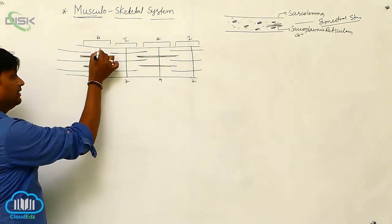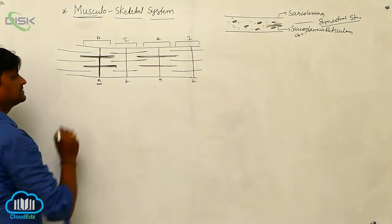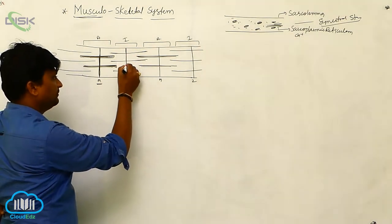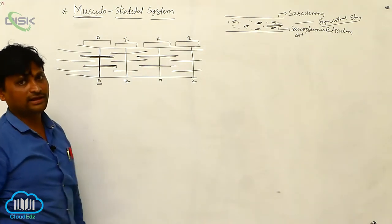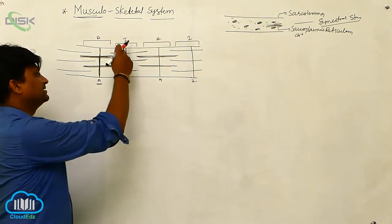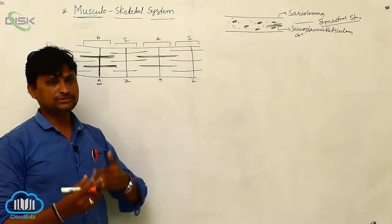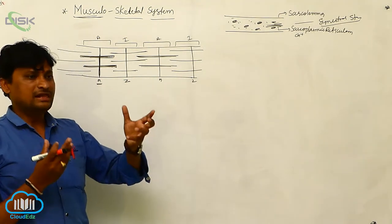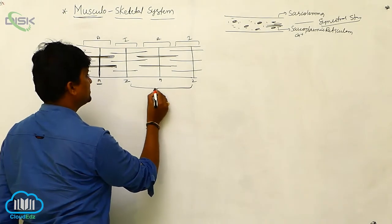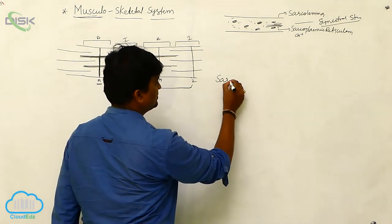In the A band there is one line — a membrane — which we call the M line. In the center of the I band there is another line called the Z line, also known as the cruces membrane or Dobi's membrane. The structural unit of the muscle — between two Z lines — is what we call the sarcomere.